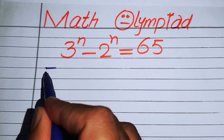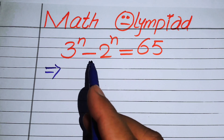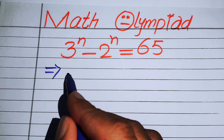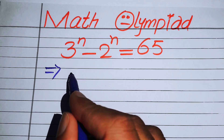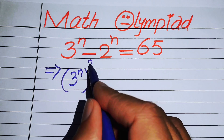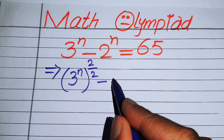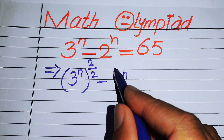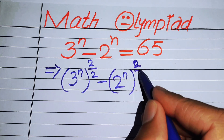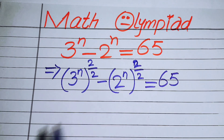The very first thing we are going to do is multiply and divide both of these terms by 2 in their exponents, so we can write it as 3 to the power of n, whole power 2 over 2, minus 2 to the power of n, whole power 2 over 2, and it equals 65.